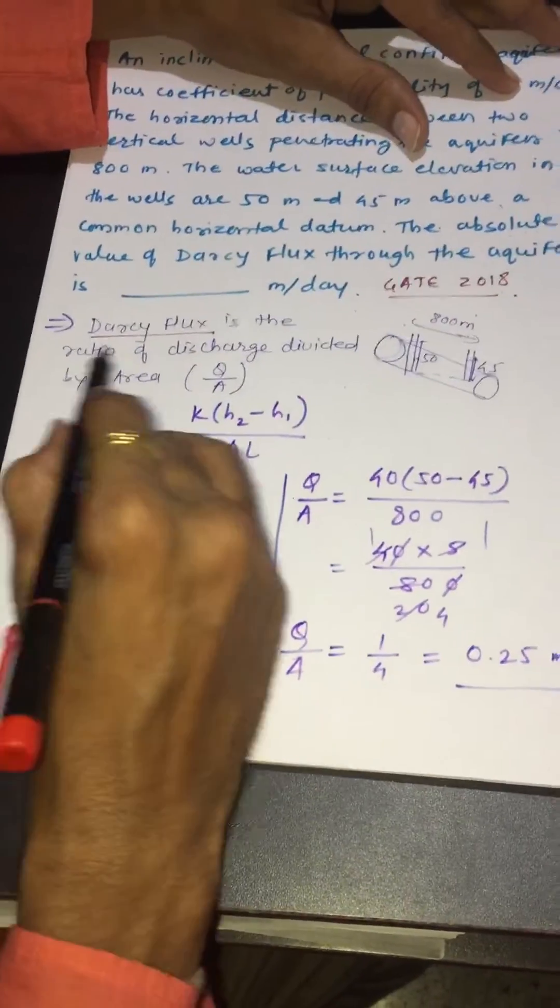Substitute this value in the given formula. We get 40 multiplied by 50 minus 45 in brackets divided by 800. Calculate, zeros get cancelled, 40 by 2 and then by 4.